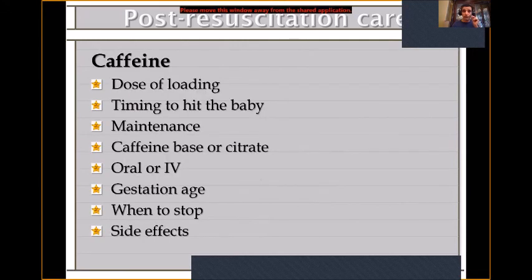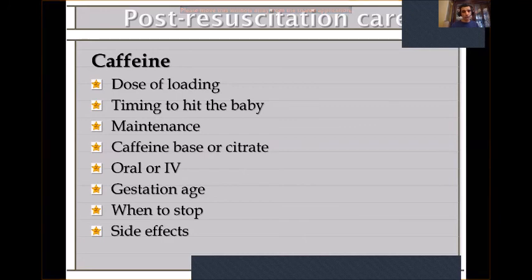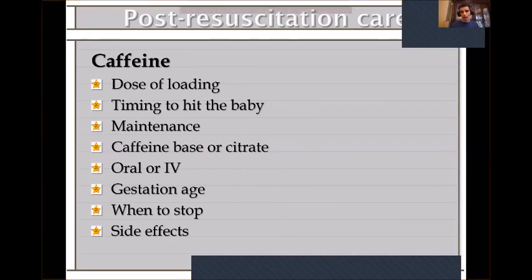It is very important to start caffeine early. We use caffeine base, not citrate, and give a loading dose. I advise starting with a lower dose then giving maintenance, so you have room for additional loads if the baby is not breathing. Decide whether IV or oral, based on gestational age, and when to stop — we usually stop at 35 weeks corrected age, always monitoring for side effects.